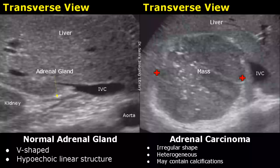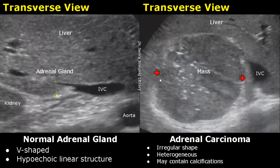Adrenal carcinoma is a cancer involving the adrenal glands. The mass will have an irregular shape and will be heterogeneous. It may also contain calcifications — we can see hyperechoic calcifications within the mass.